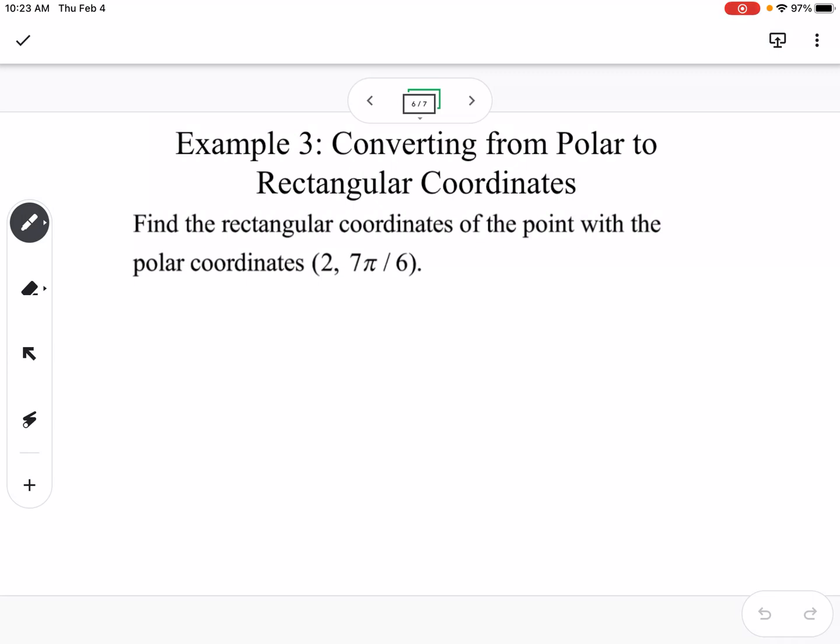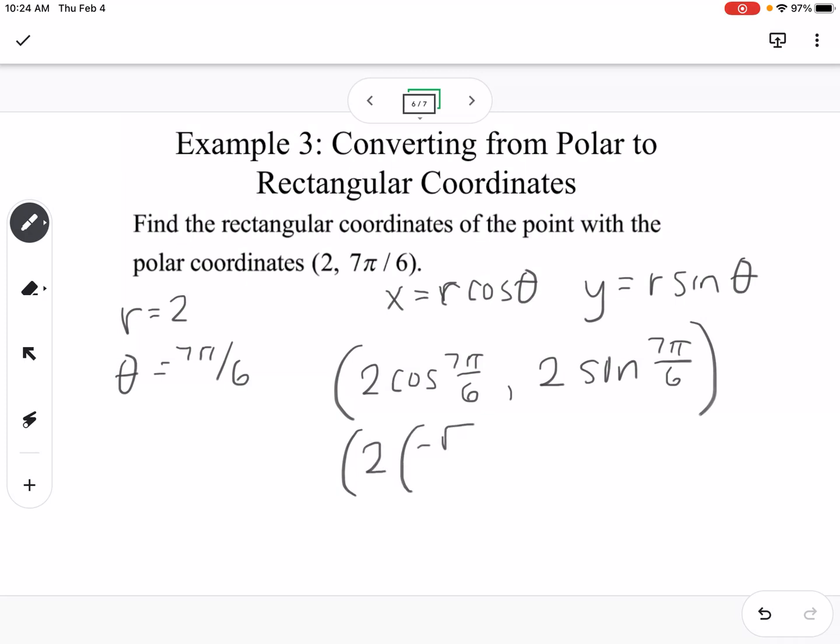So the first one we're going to look at is how do we convert from polar coordinates to rectangular coordinates? So you can see here we have the point 2, 7 pi over 6, so R is 2, and theta is 7 pi over 6. So we're going to use the fact that X is equal to R cosine of theta, and Y is R sine of theta. So we can write this as 2 cosine of 7 pi over 6, and 2 sine of 7 pi over 6. This is where it's super helpful that you know your unit circle still, so this is 2 times negative square root of 3 over 2, and 2 times negative 1 half. So that gives us the point negative square root of 3, negative 1.